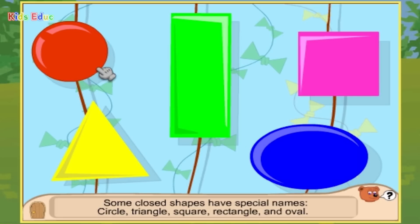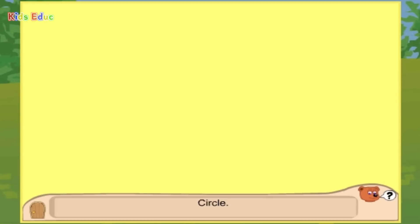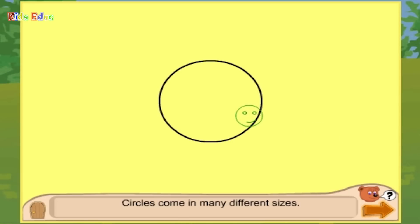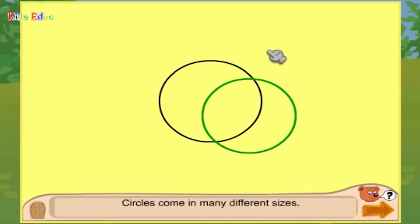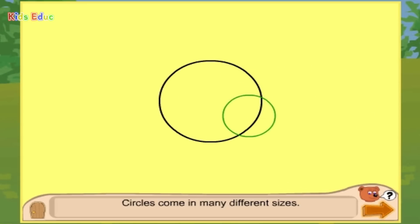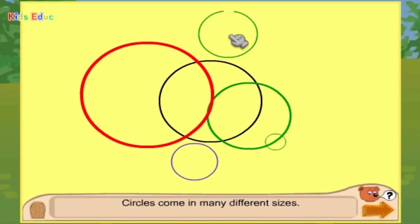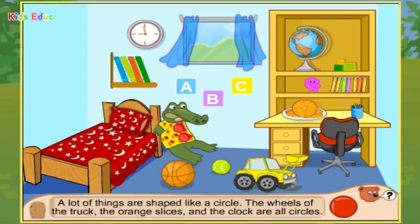Circle. This is how you draw a circle. A circle is round. Great! Circles come in many different sizes. A lot of things are shaped like a circle. The wheels of the truck, the orange slices, and the clock are all circles.